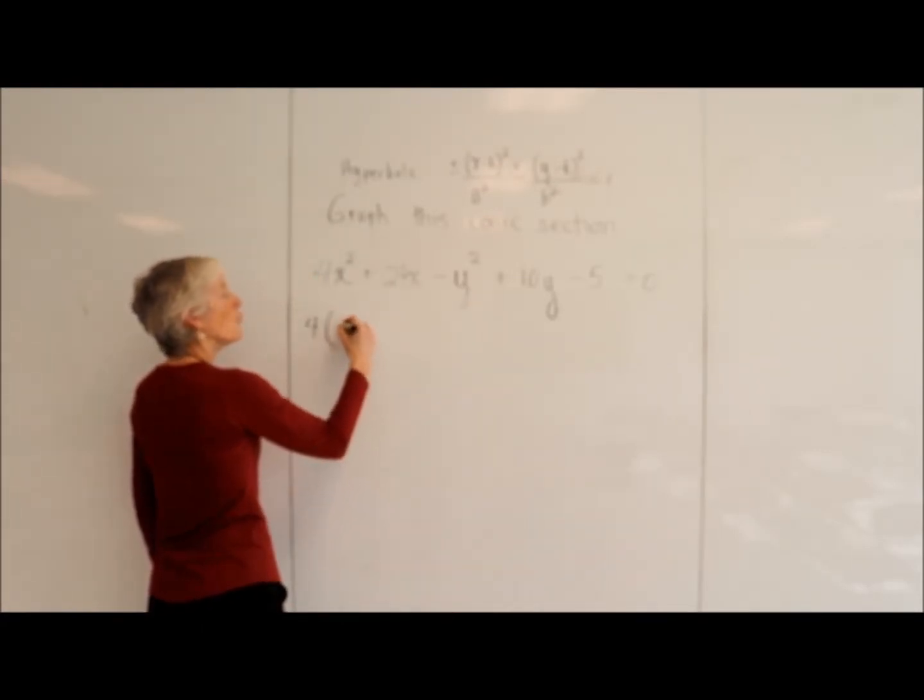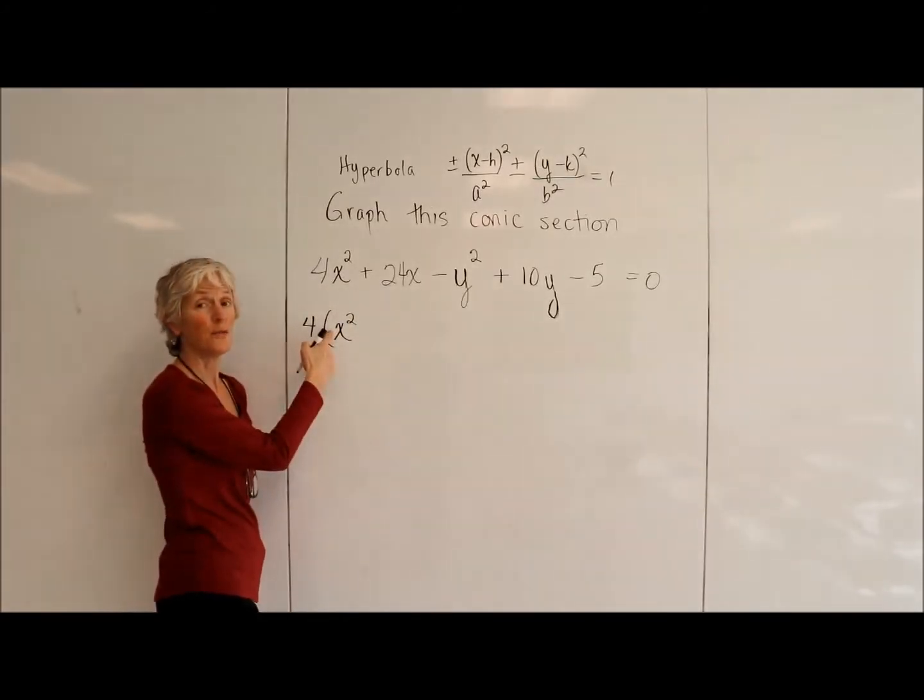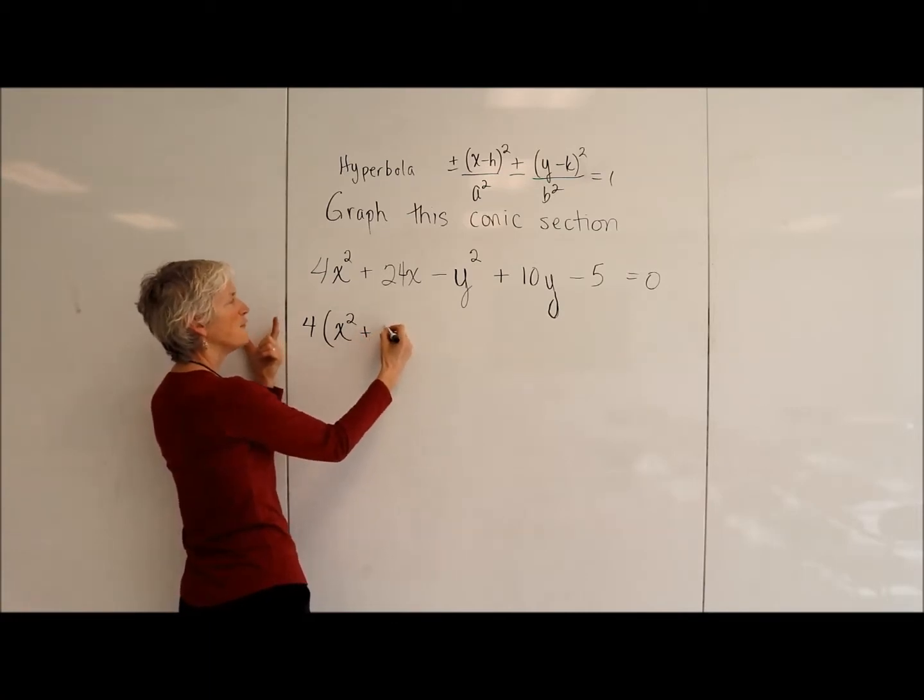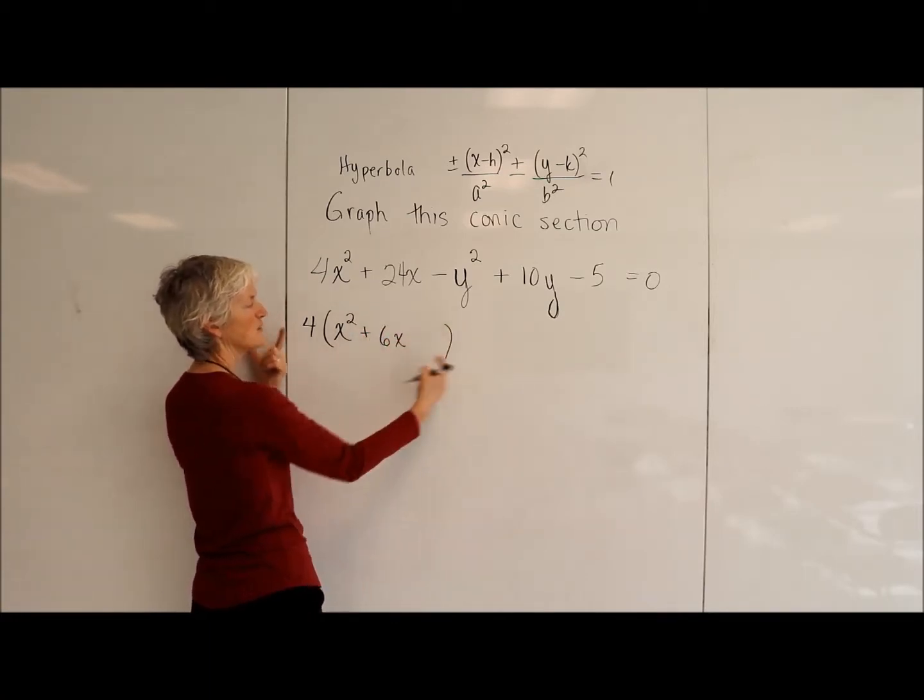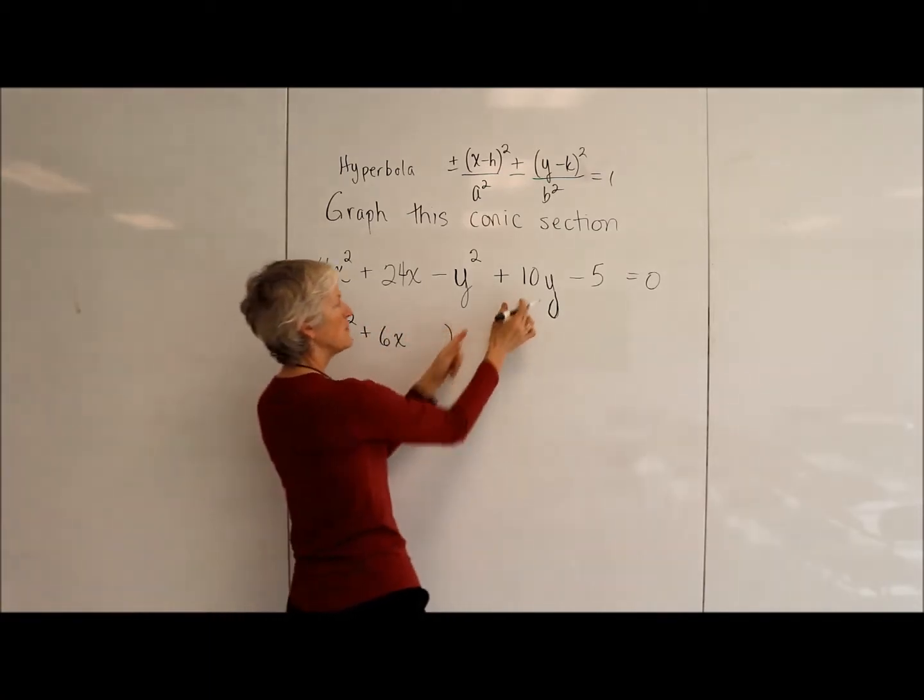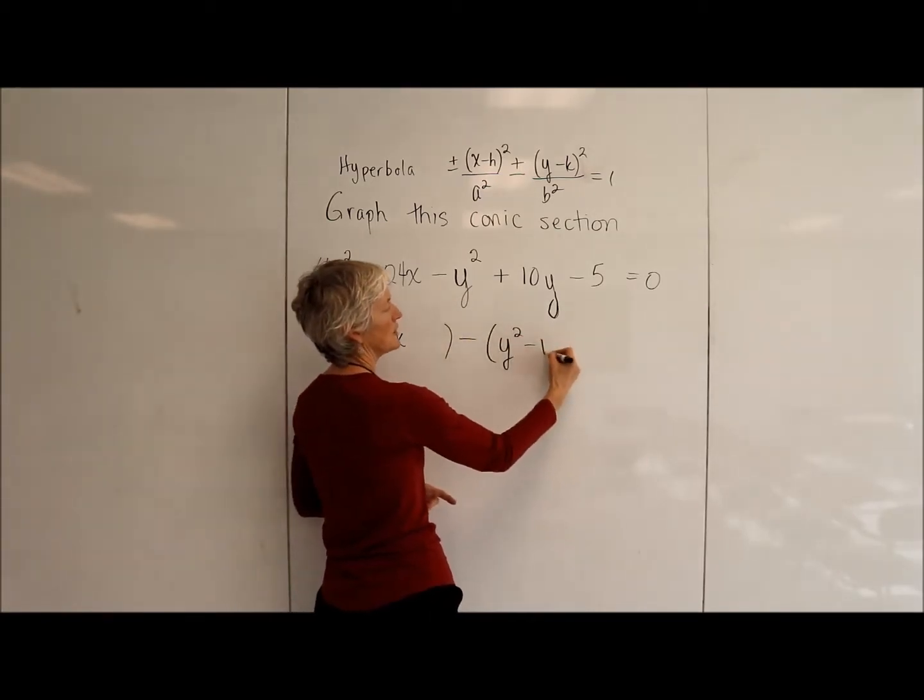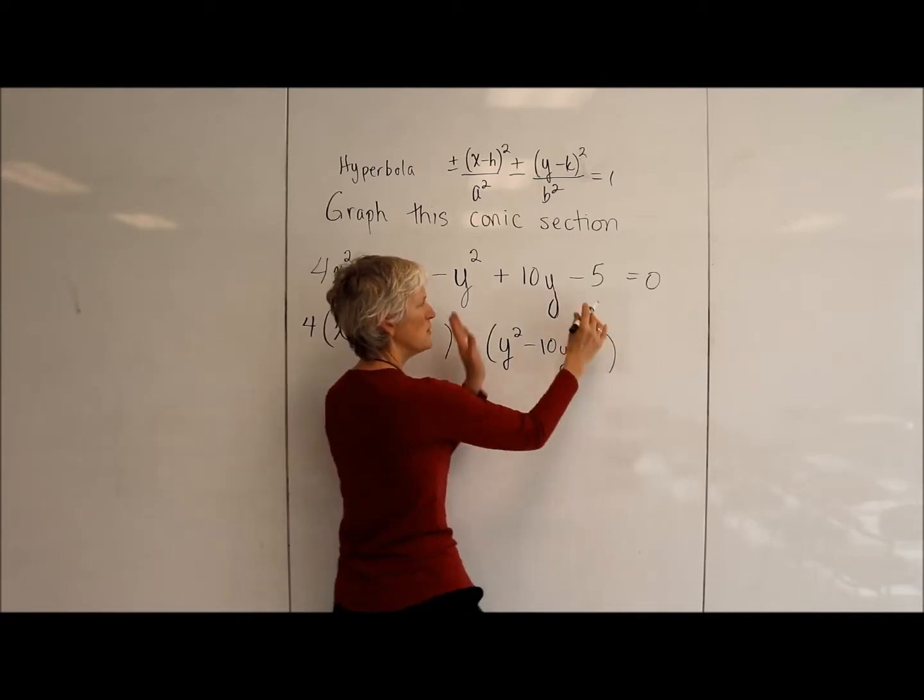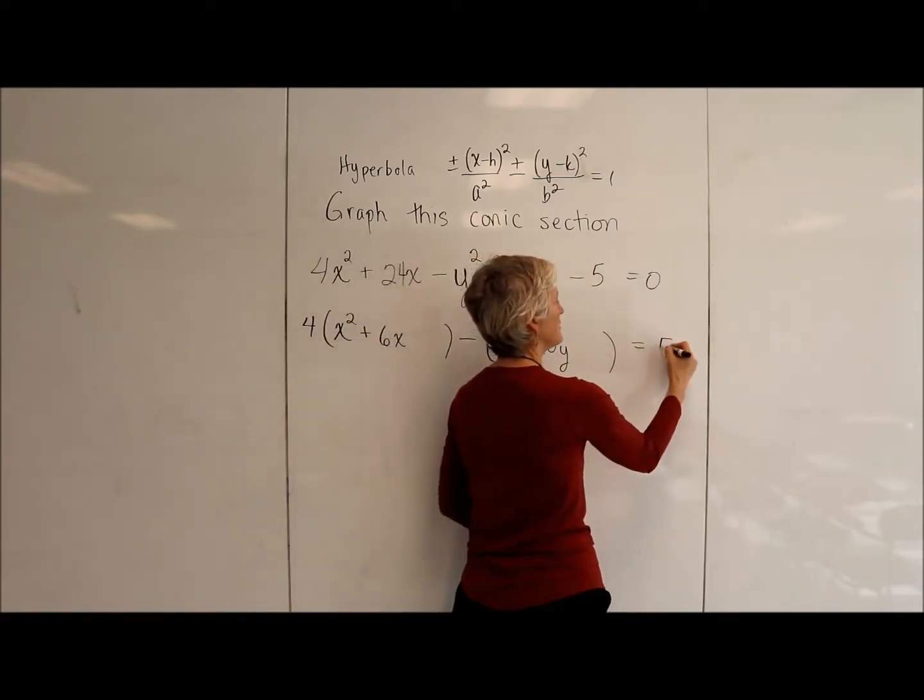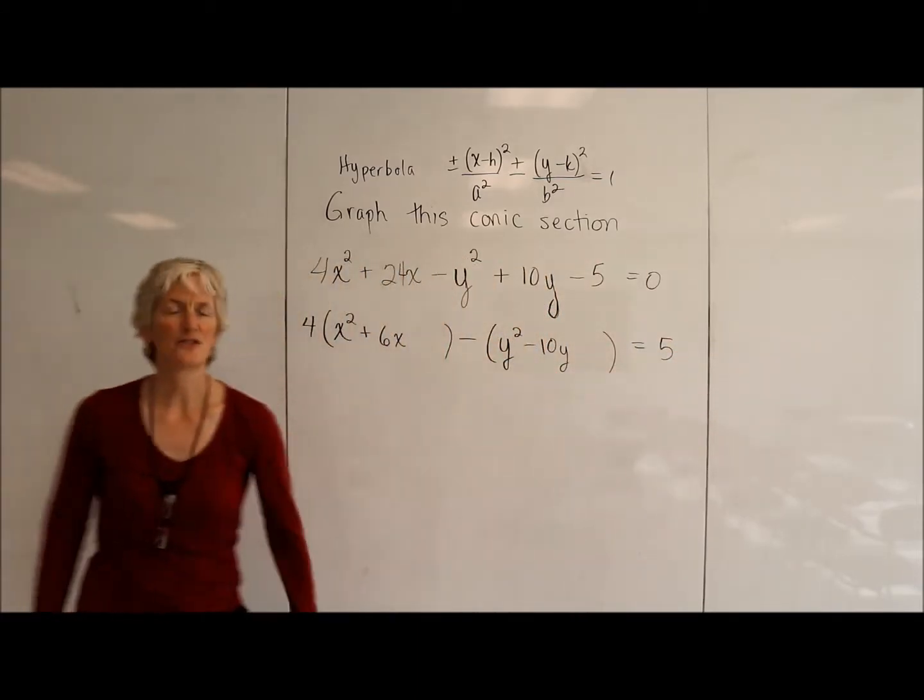So I'm going to first factor out a 4 from my x terms. I'm going to factor out a negative 1 from my y terms. And I'm just going to move that pesky 5 onto the other side, because it's not an x term or a y term.